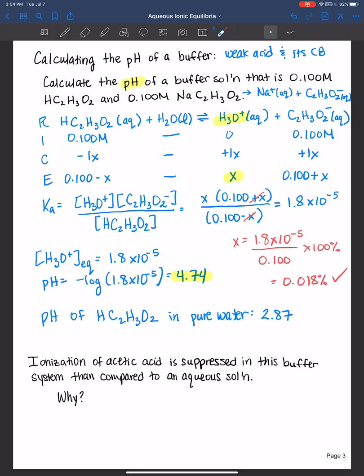But there's another reason as to why the ionization of acetic acid is suppressed in this buffer system than compared to just a pure aqueous solution. And it's based on Le Chatelier's principle and the common ion effect.